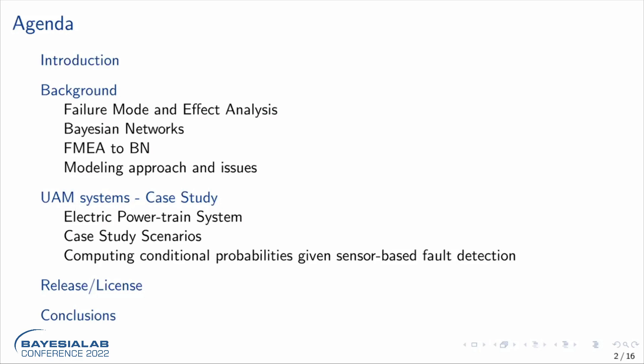One of the case studies we have taken here is about a UAM system. These systems are basically the future aircraft — the passenger taxis — and how we need to have good diagnosis and fault detection on these vehicles, because they are going to fly very close to urban areas. We have a case study scenario where we'll look into failures and how we are trying to compute the probabilities for them.